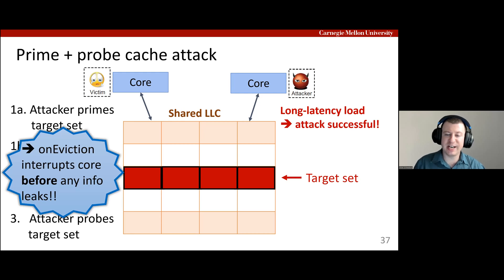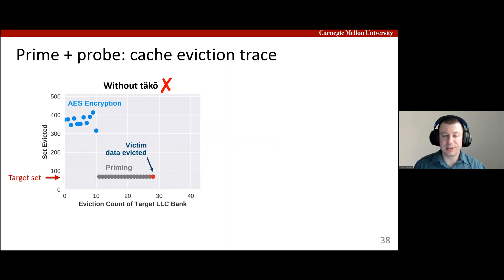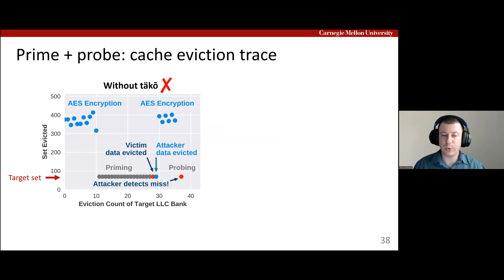TACO can detect and interrupt these kinds of attacks by notifying the victim when the attacker primes the cache before any sensitive data is leaked. This graph shows a trace of evictions from different sets of a shared cache bank. The victim performs an AES encryption, incurring some evictions. The attacker then primes the target set, evicting the victim's data. The next encryption by the victim evicts the attacker's prime data, leaking sensitive information. So when the attacker probes the set, they detect an access from the victim, extracting information about the AES key.